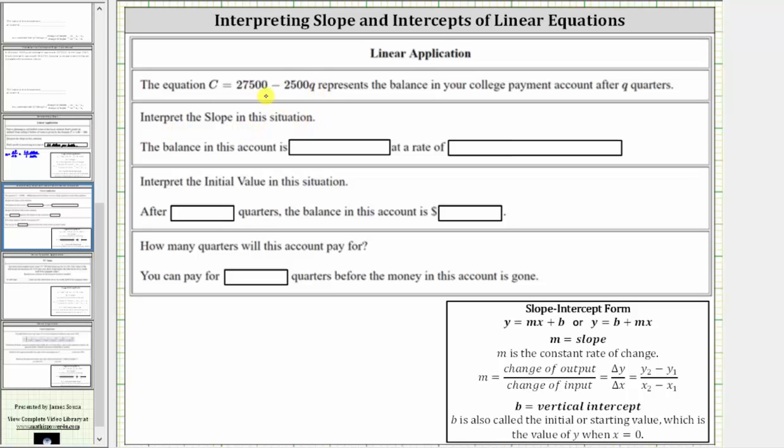Notice how the given equation is in the form Y equals B plus MX, where M, the coefficient of X, is the slope, which is the change of Y divided by the change of X. But in our case, we don't have Y and X, we have C and Q.